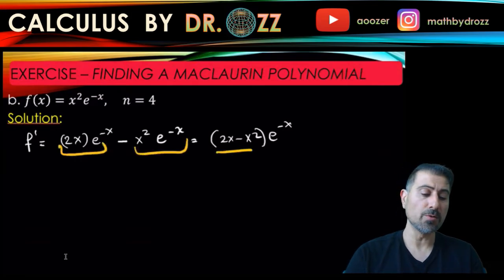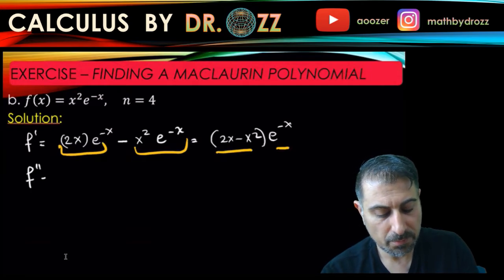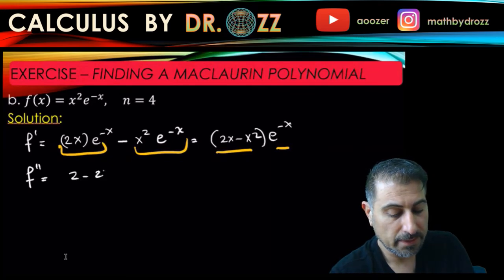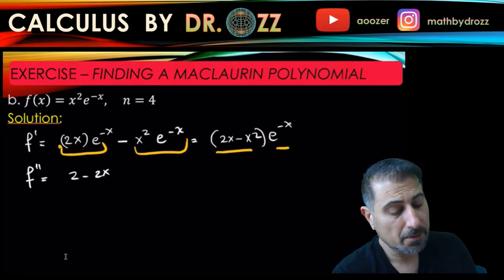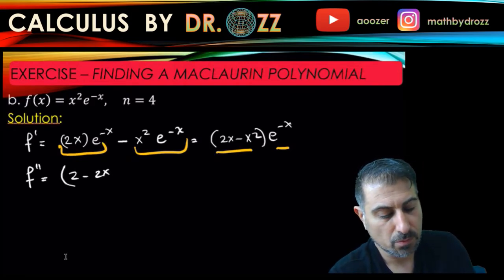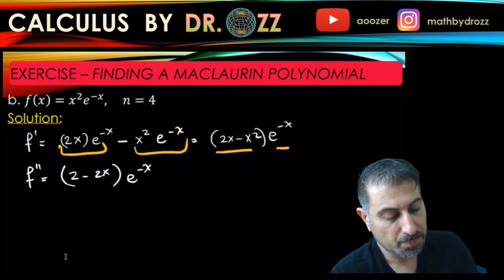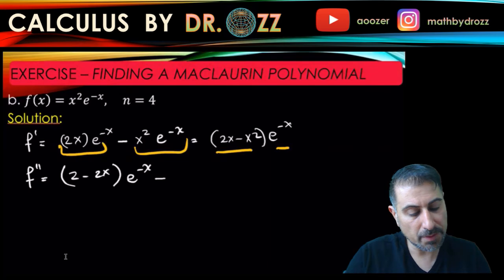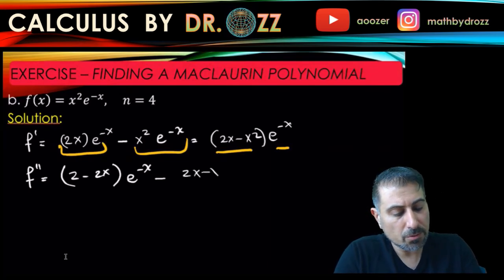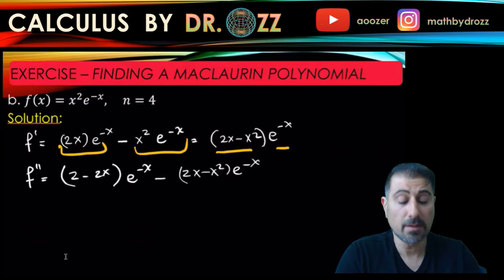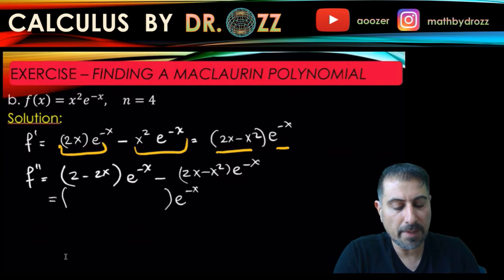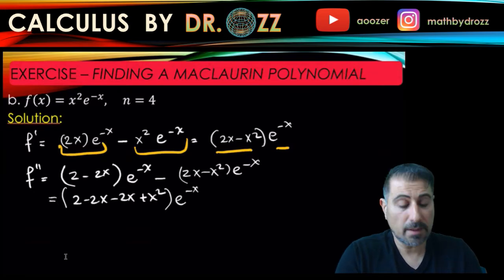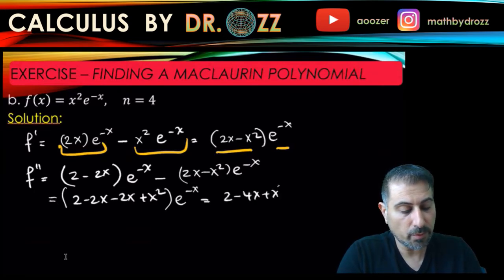So f double prime equals the derivative of the polynomial term, which is (2 minus 2x), times e to the minus x, plus the derivative of e to the minus x — which brings a minus sign — times (2x minus x squared). Factoring out e to the minus x, we get (2 minus 2x) minus (2x minus x squared), which simplifies to (2 minus 4x plus x squared) times e to the minus x.